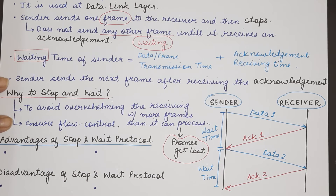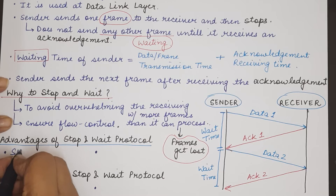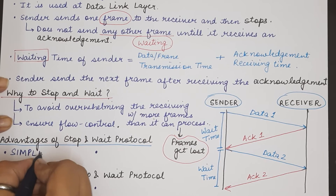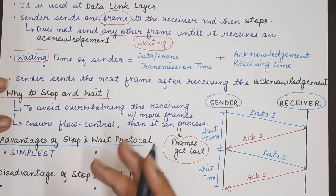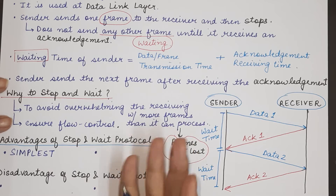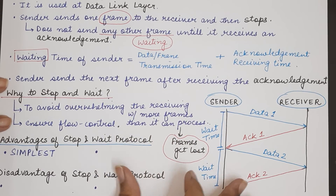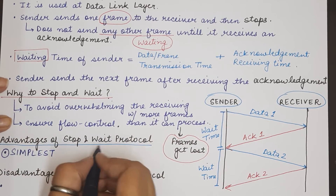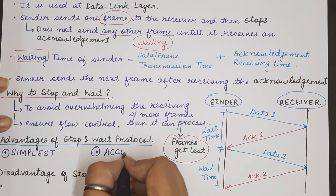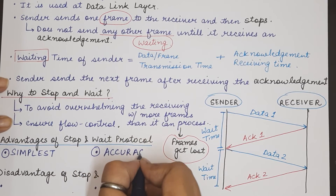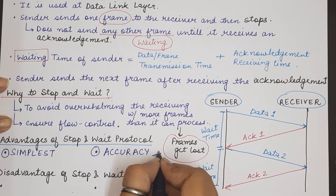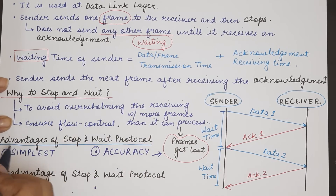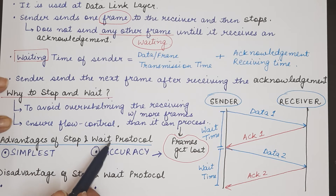The advantages of the stop and wait protocol are: first, it is the simplest flow control protocol, as further protocols get more complex in their implementation and logic. Second, it ensures accuracy — frames do not get lost.